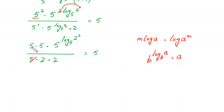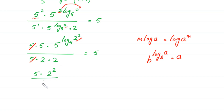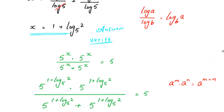Now the 5 in numerator and denominator cancel. According to the property b to the power log base b of a equals a, 5 to the power log base 5 of 2 squared equals 2 squared. So we have 2 squared divided by 2 times 2, which is 4, equal to 5. The 4 cancels with 2 squared, leaving 5 equals 5. Left hand side equals right hand side, so it is proved that x equals 1 plus log base 5 of 2 is a valid solution.